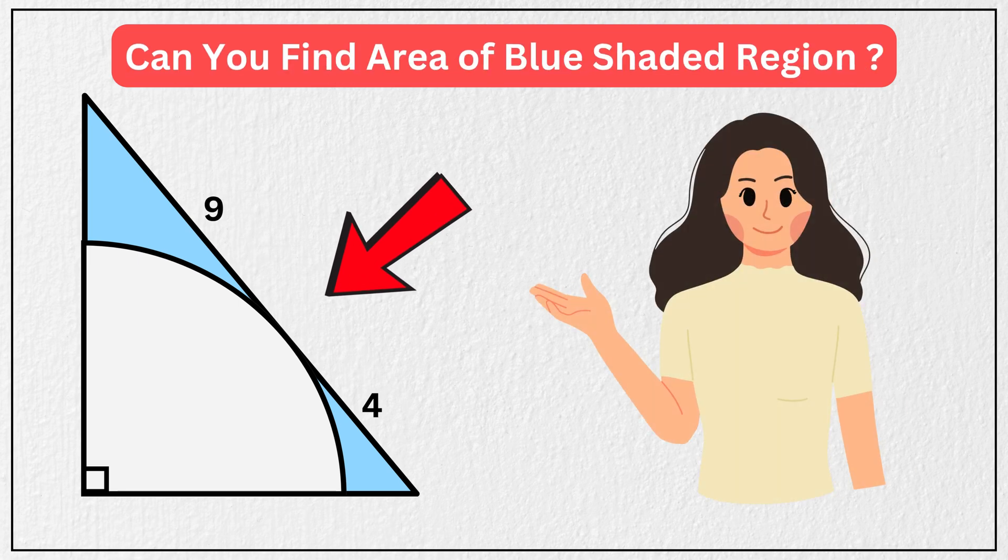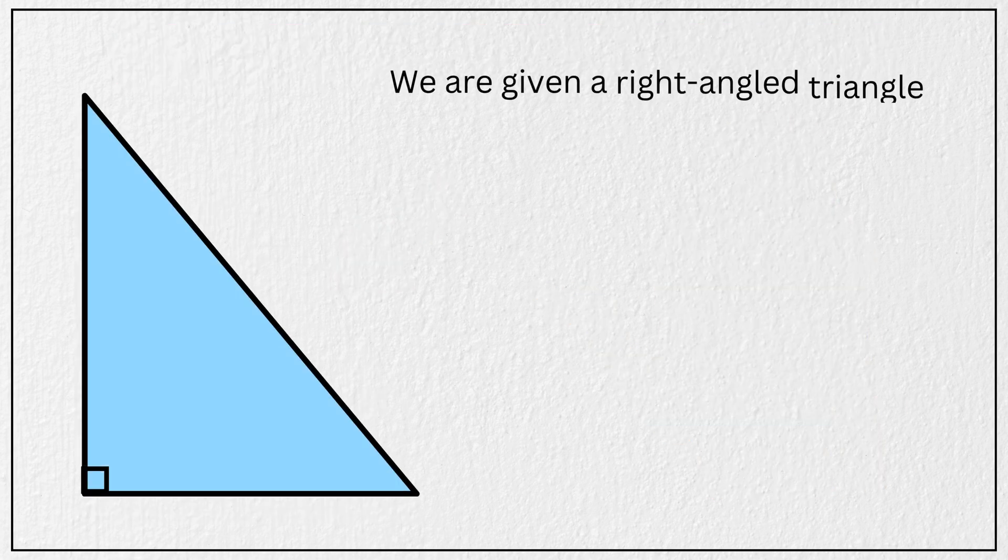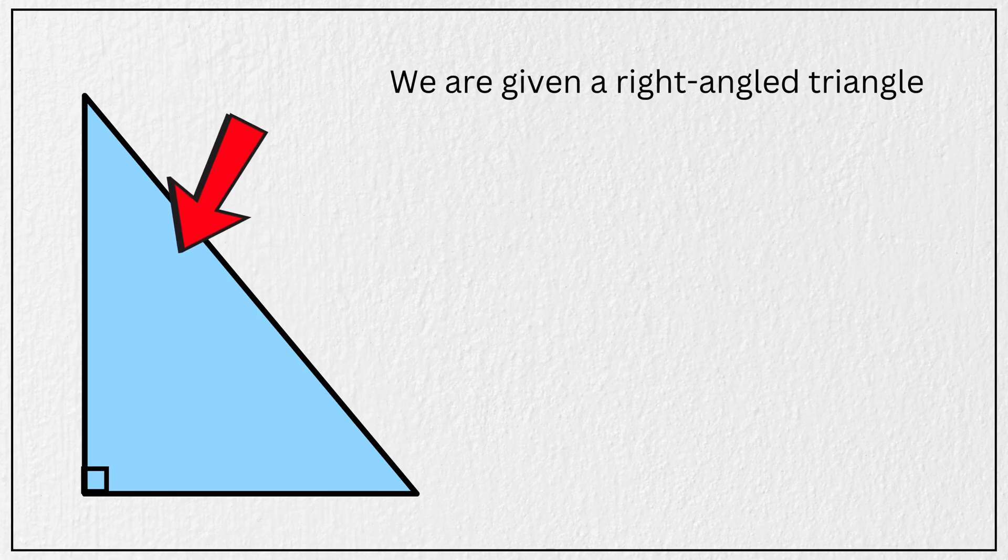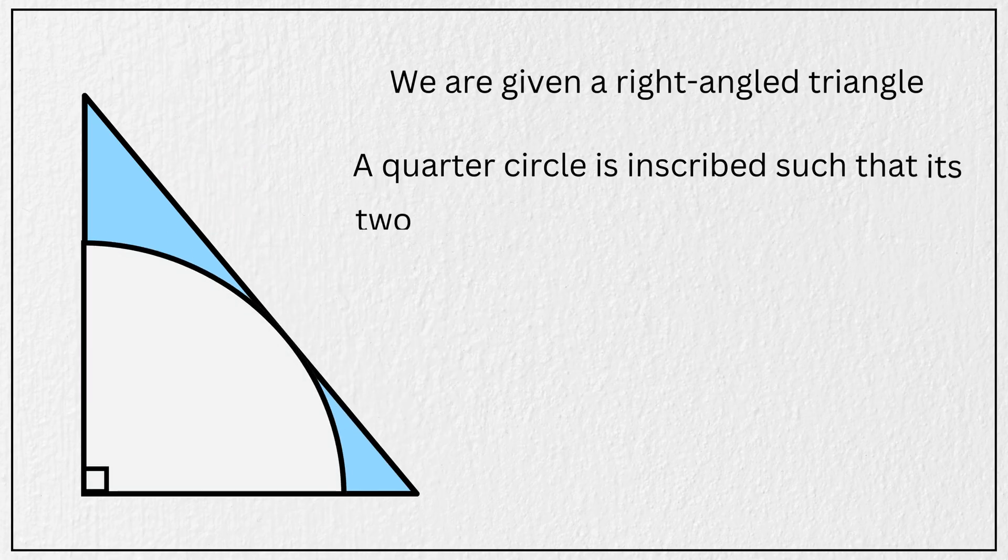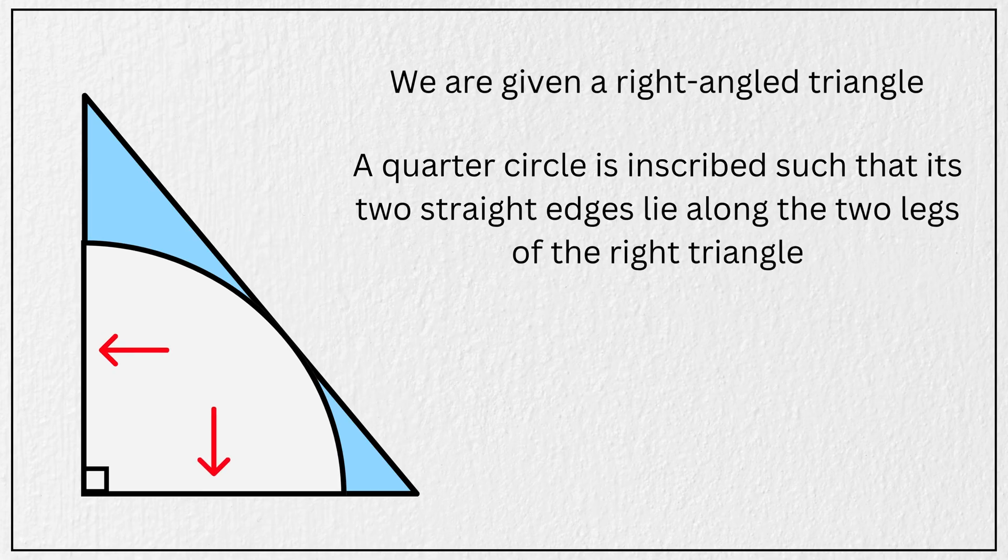Can you solve this tricky geometry question? We are given a right-angled triangle. Inside this right triangle, a quarter circle is placed in such a way that its two straight edges lie along the two legs of the right triangle like this.